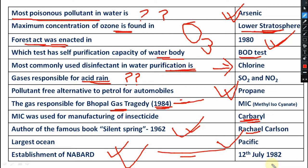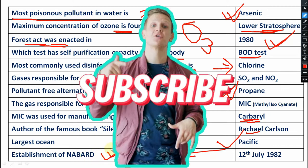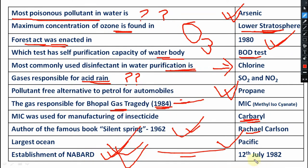NABARD establishment date — 12th July 1982 — is an important question for AFO and similar exams. The full form everyone must know: National Bank for Agriculture and Rural Development. That is the abbreviation NABARD, established on 12th July 1982. Very very important.